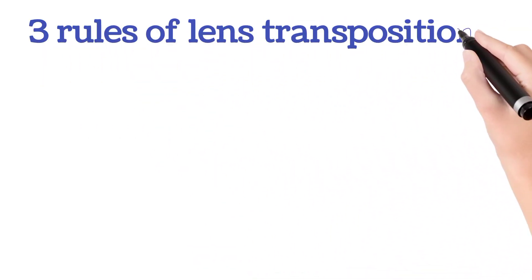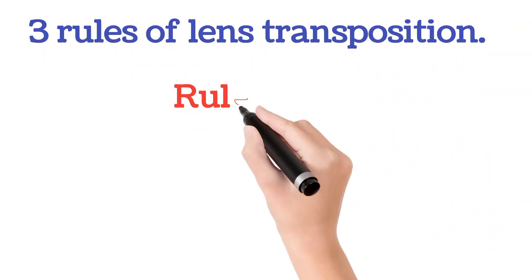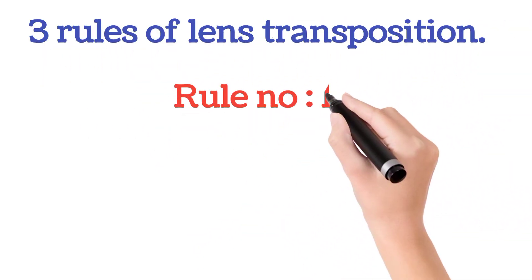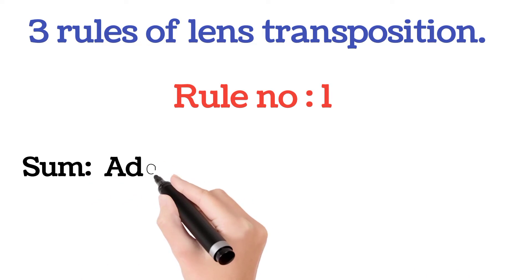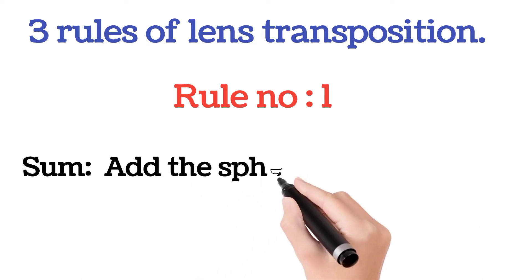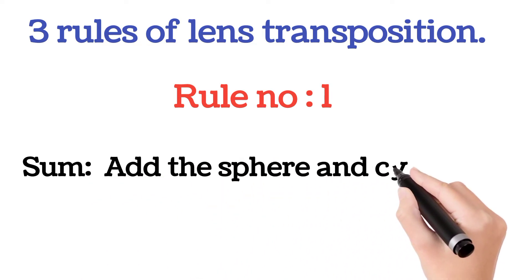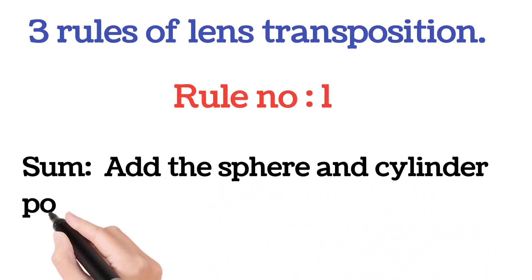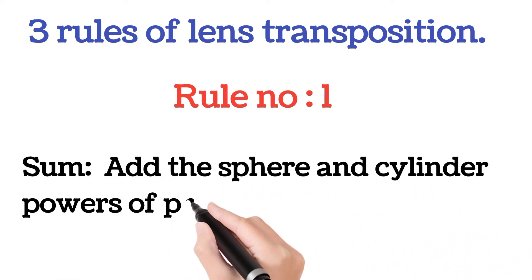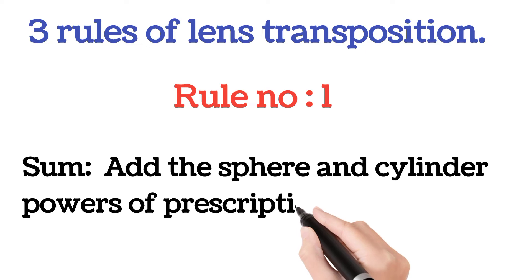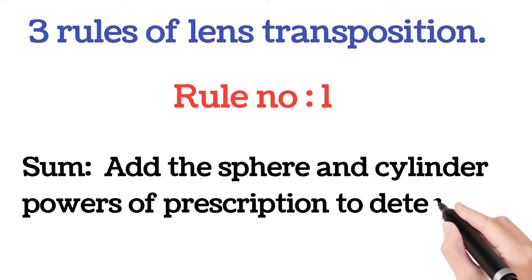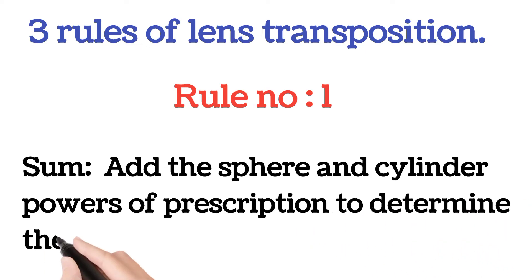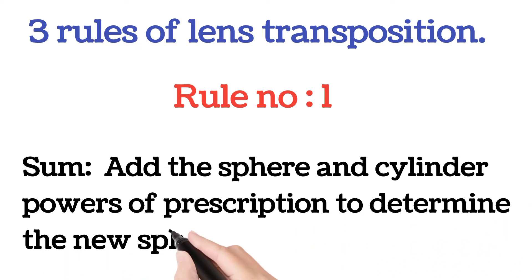There are three rules of transposition. Rule number one: summation — add the spherical and cylindrical power of the prescription to determine the new spherical power.